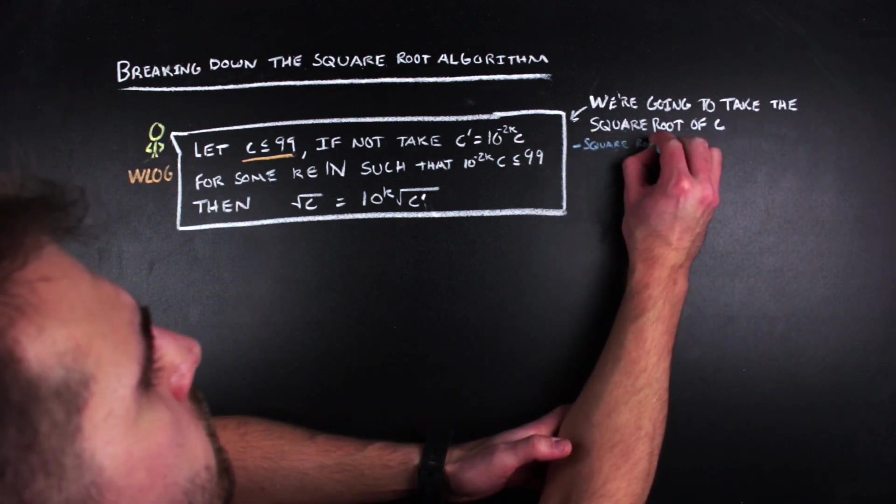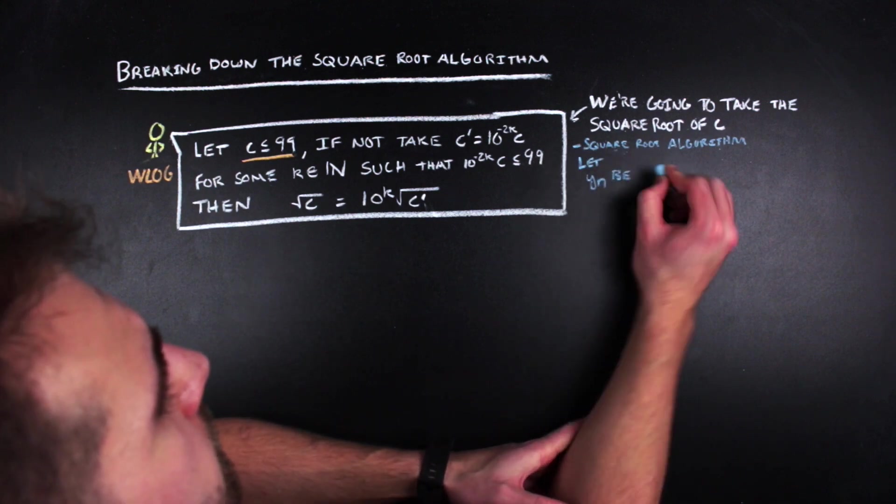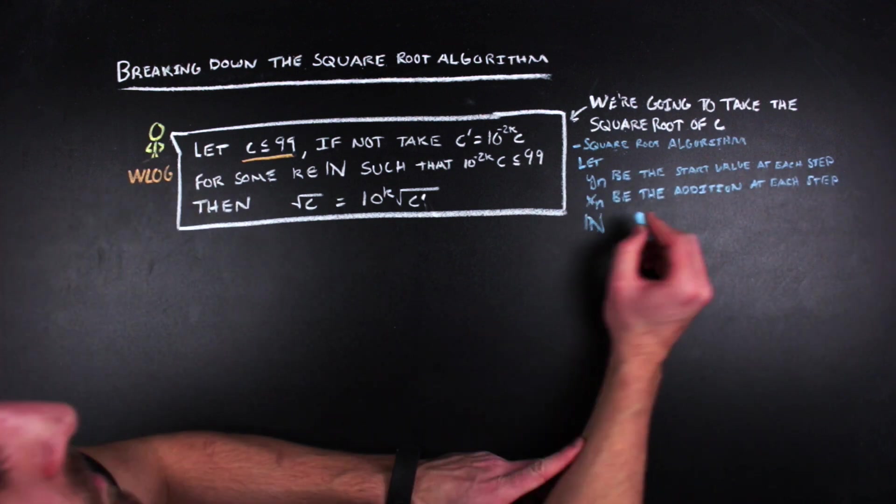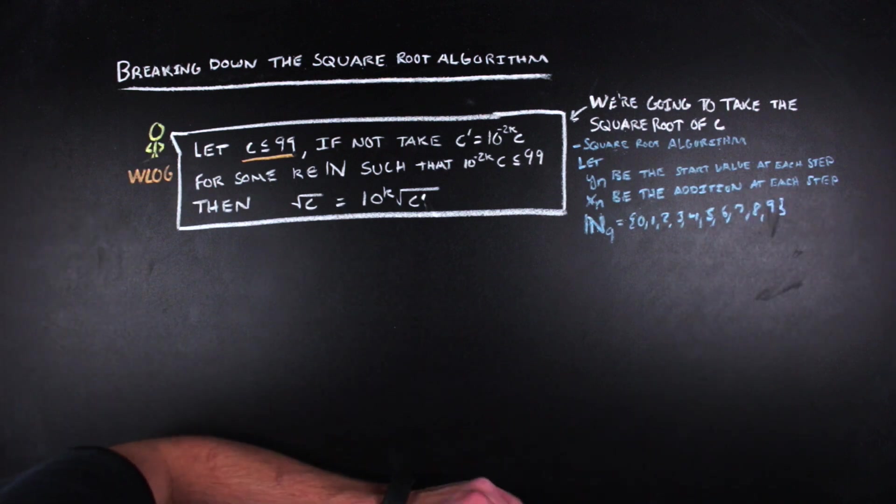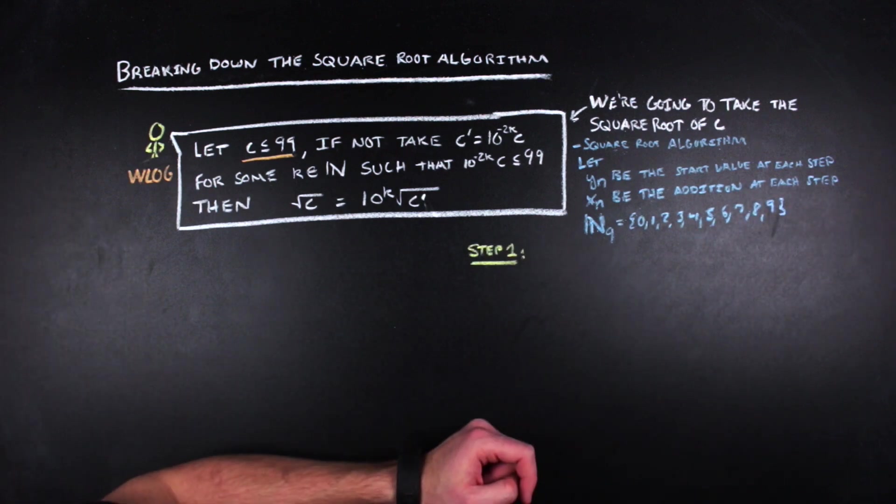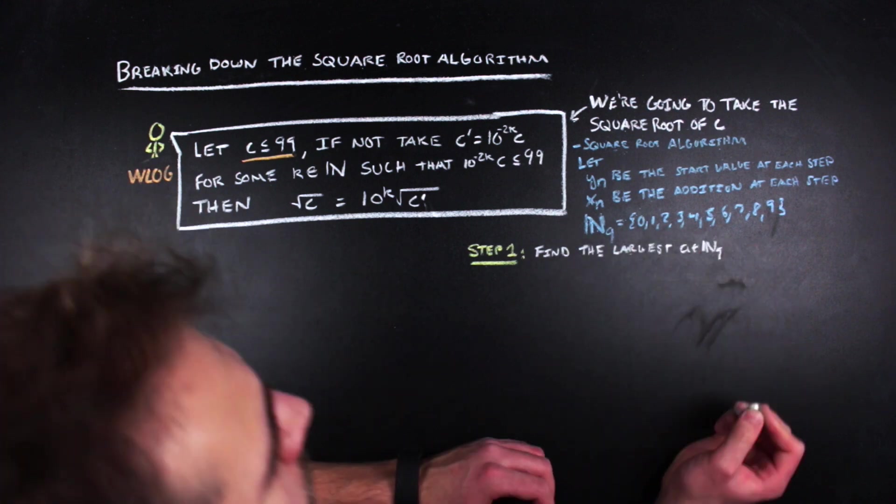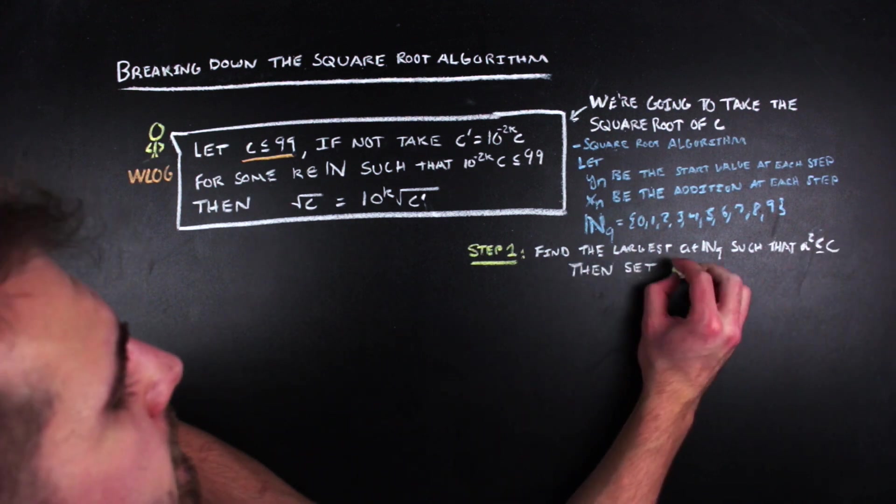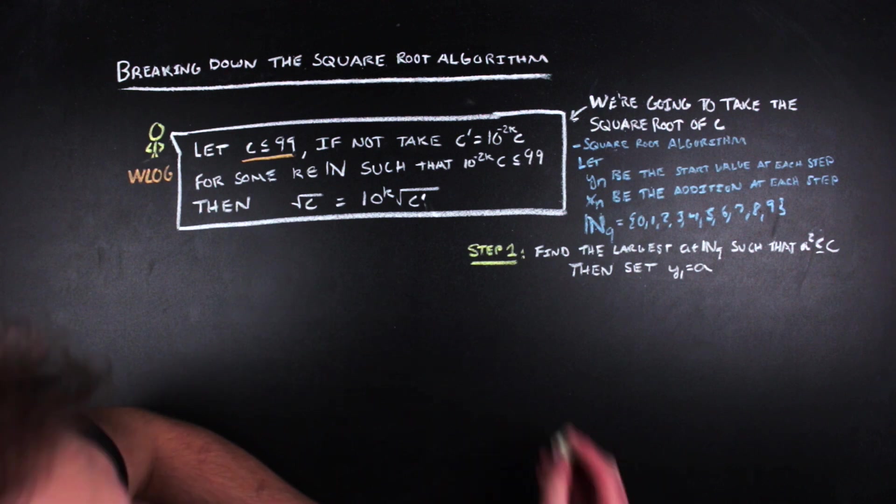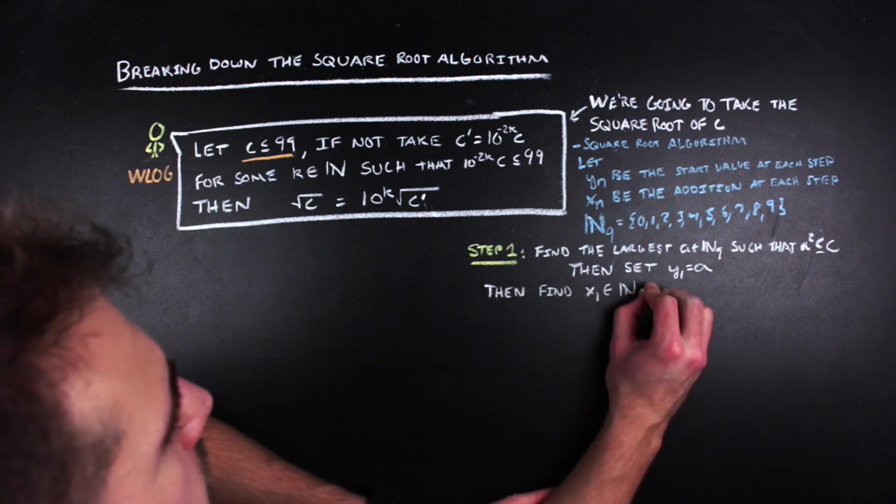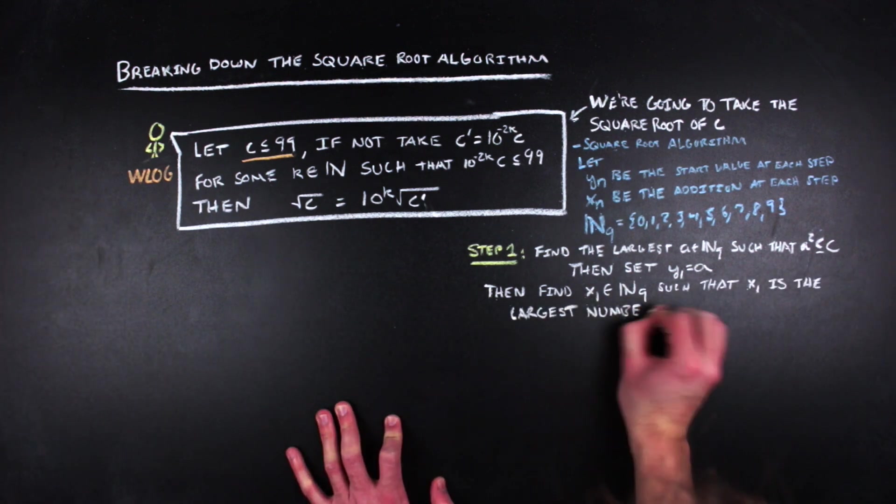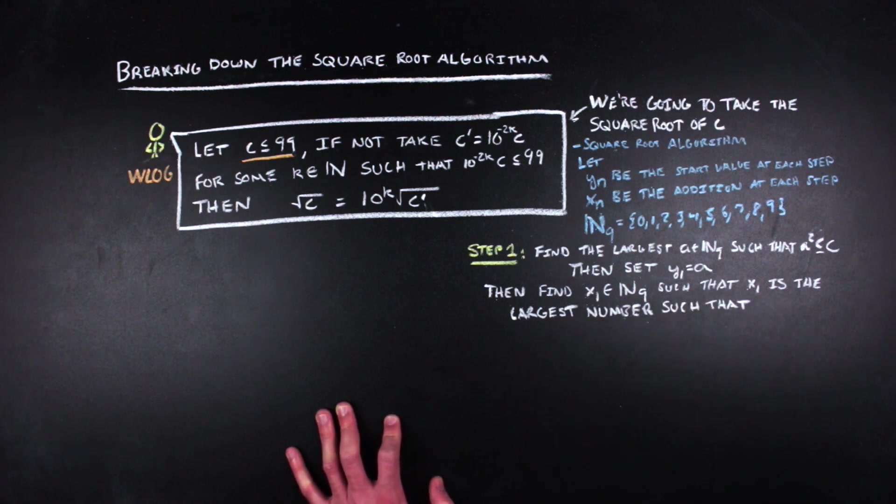With this caveat aside, let y sub n be the start number at each step in the process, and let x sub n be the addition at each step. We're going to let this blackboard bold N sub 9 be the natural numbers from 0 to 9. So first step, find y sub 1 in N sub 9 such that y sub 1 squared is less than or equal to our c, and y sub 1 is the largest possible number that satisfies that inequality. Once we find y sub 1, we can find x sub 1 by looking for a number in N sub 9 such that this expression is less than c, and such that x sub 1 is the largest such number that satisfies that inequality.